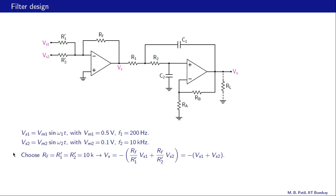Now let us come to the second part of the problem, where we have two sinusoidal voltage sources: Vs1 equal to Vm1·sin(ω1·t) with a low frequency, and Vs2 equal to Vm2·sin(ω2·t) with a high frequency. We want to add these two and then apply them to the filter circuit. We can use an op amp summer to add these two voltages.